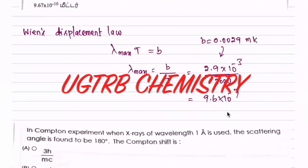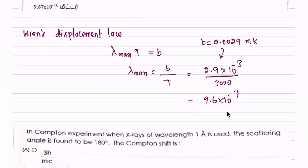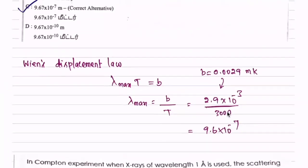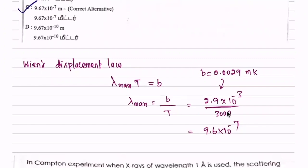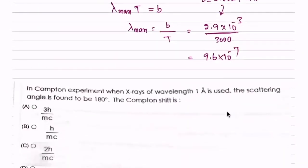In the Compton experiment, we will see the Compton effect. When x-rays of wavelength one angstrom is used, the scattering angle is found to be 180 degrees. The Compton shift is 2h/mc. At 180 degrees, we get 2h/mc.